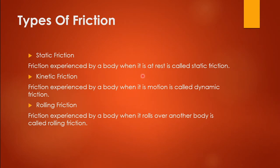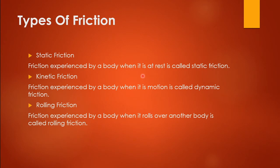The next type is kinetic friction or dynamic friction. When the body is in motion, the friction experienced by the body is called kinetic friction or dynamic friction. The third type is rolling friction — when a rounded body rolls on another surface, the friction experienced by that body is called rolling friction.